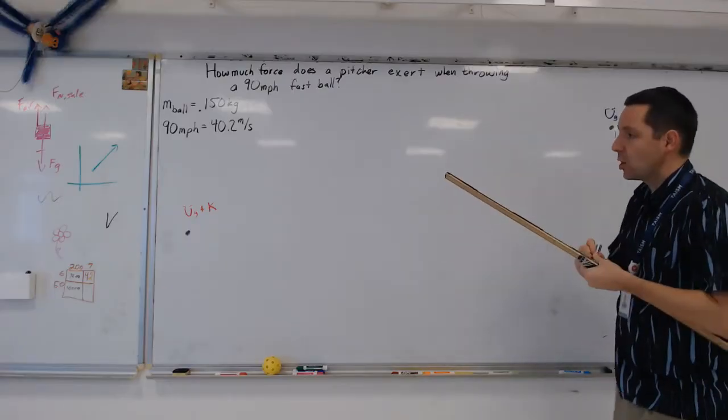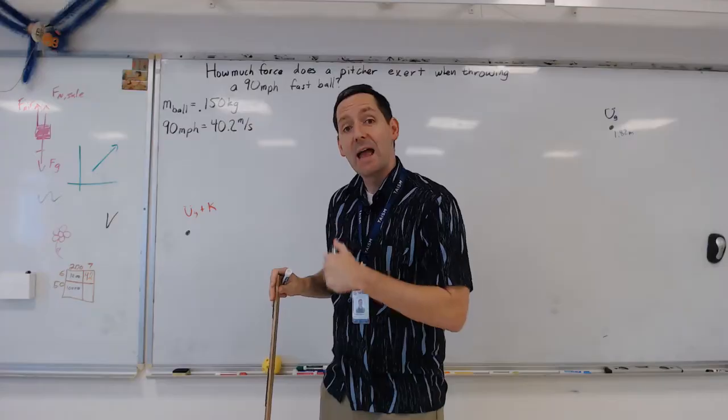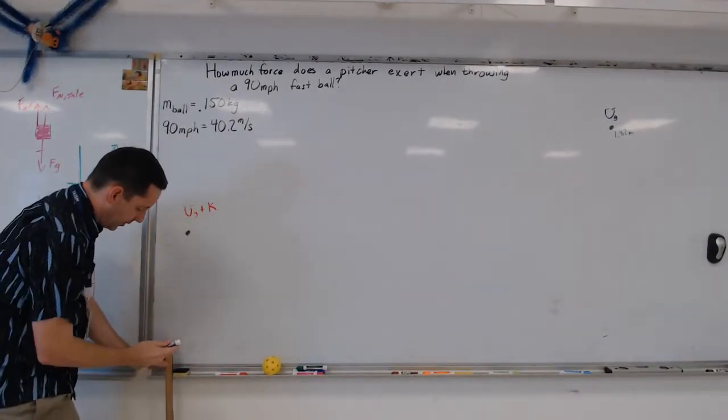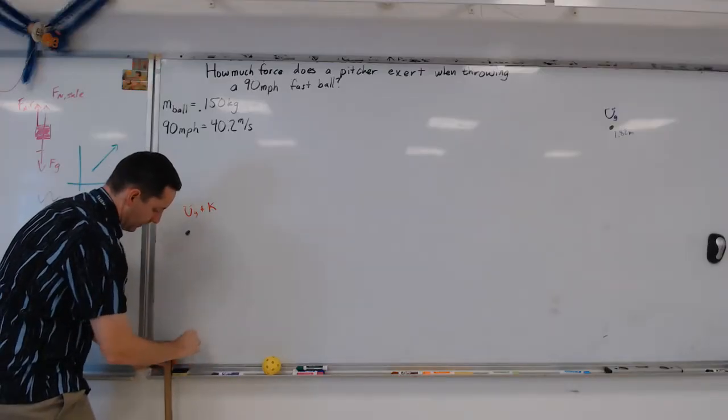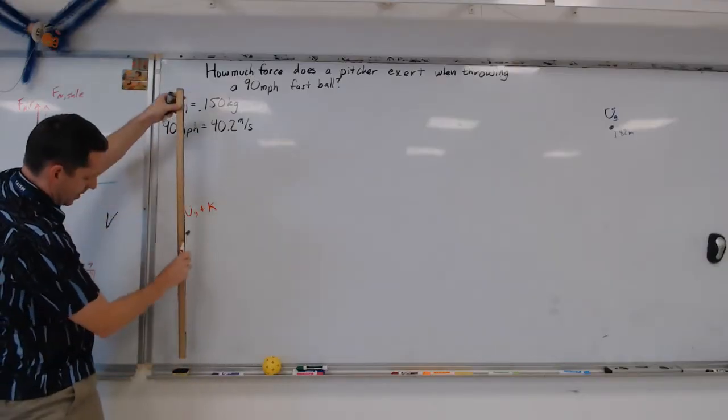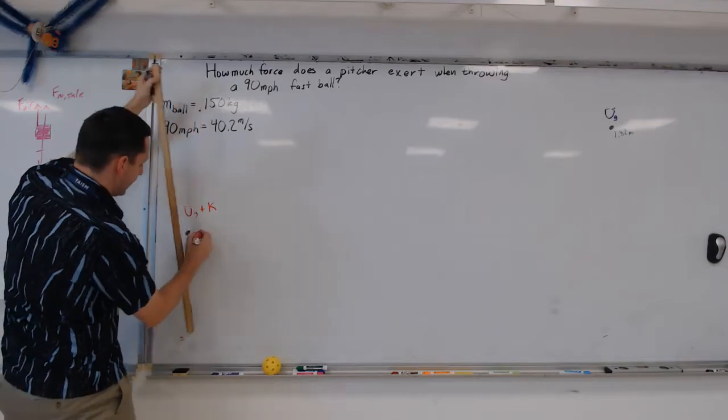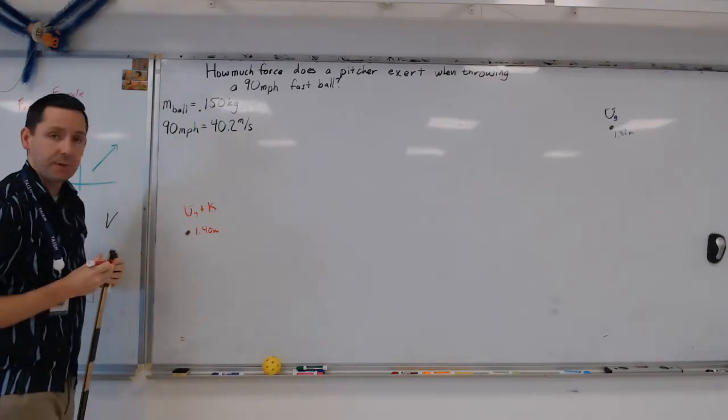Now we go to this one over here, and we find the gravitational potential energy at that one. We're going to go again from the ground, the ground will take us to this point right here. Then from there, we're going to measure up to the point, which is right at 40. So that is 1.40 meters up in the air.